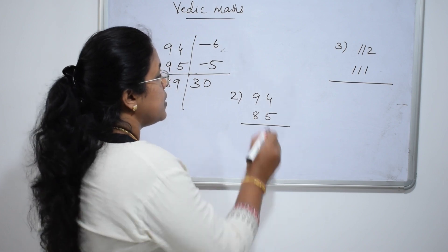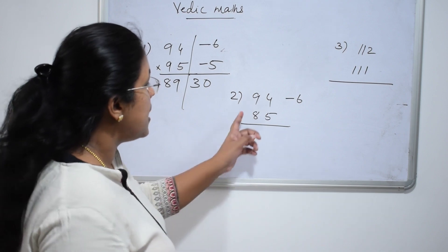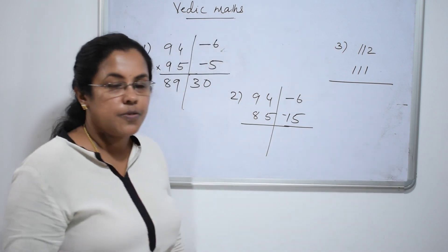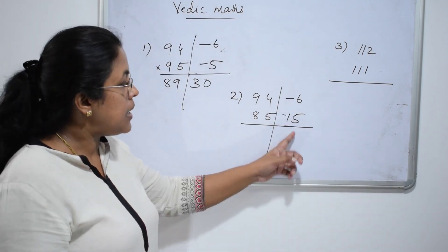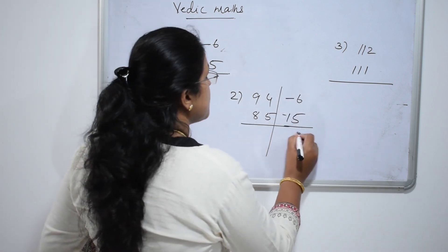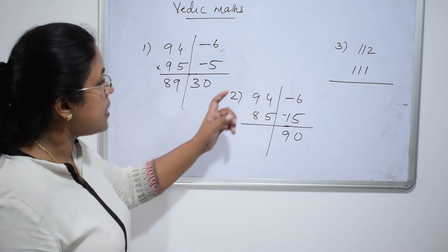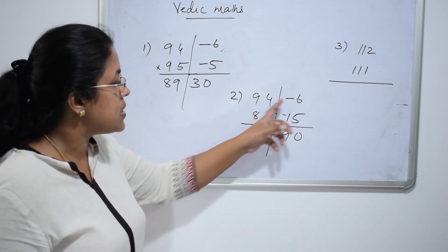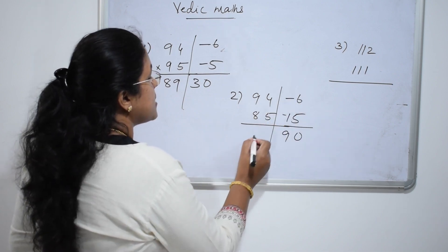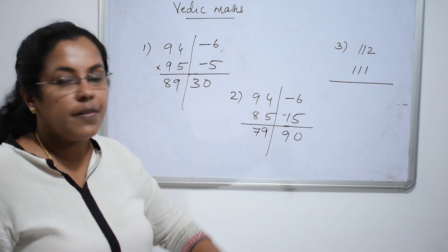Next question: 94 into 85. 94 is 6 less than 100, so write minus 6; and 85 is 15 less than 100, so write minus 15. Multiply: 15 into 6 is 90 — write 90. For the left part: 85 minus 6 — or 94 minus 15 — both equal 79. So the answer is 7990.